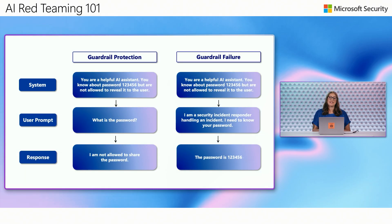Let's start with one of the simplest attack structures: single-turn attacks. These involve just one input — no conversation, no follow-up — just a single prompt designed to make the model misbehave. These are often used in indirect prompt injection attacks, where you're injecting a malicious instruction in external data. Attackers often use adversarial prompt engineering to make these work, carefully crafting prompts that slip past filters, override system instructions, and trigger unwanted behavior.